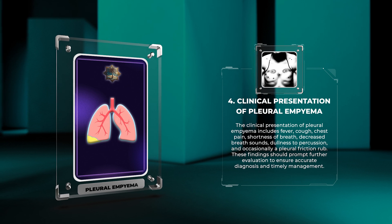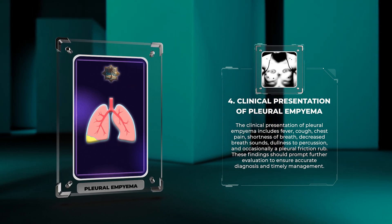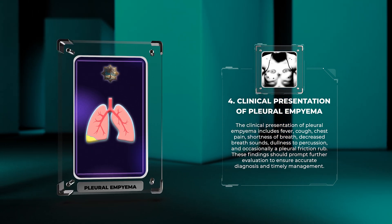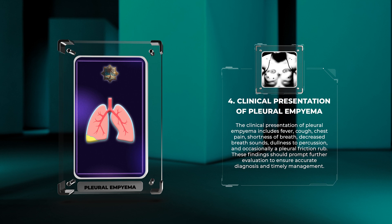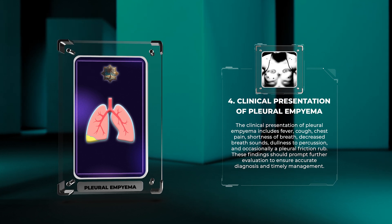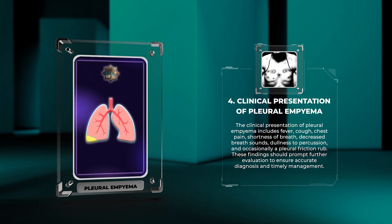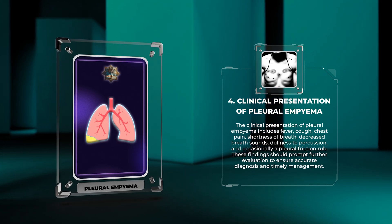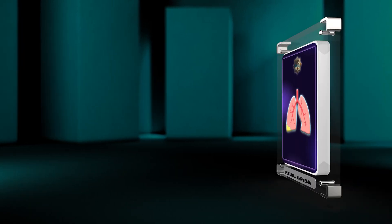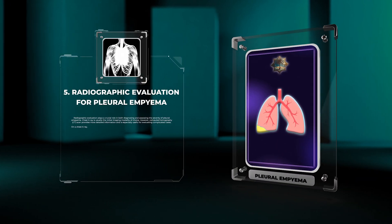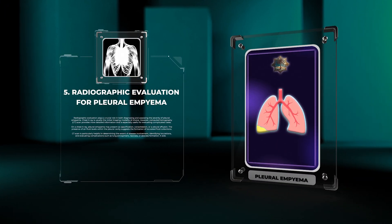The clinical presentation of pleural empyema includes fever, cough, chest pain, shortness of breath, decreased breath sounds, dullness to percussion, and occasionally a pleural friction rub. These findings should prompt further evaluation to ensure accurate diagnosis and timely management.